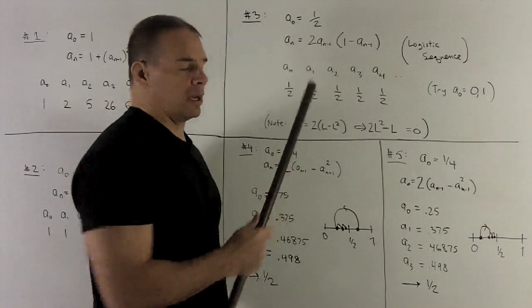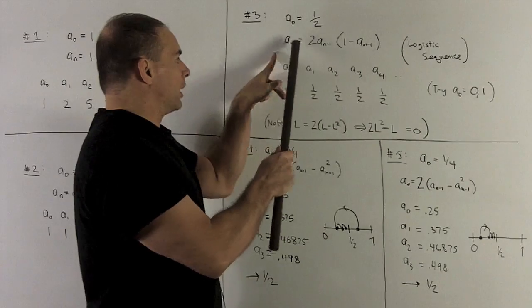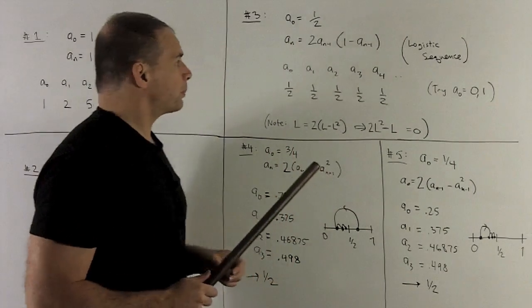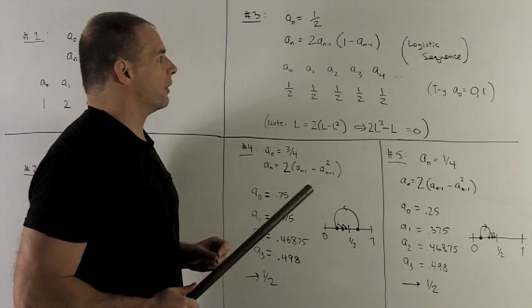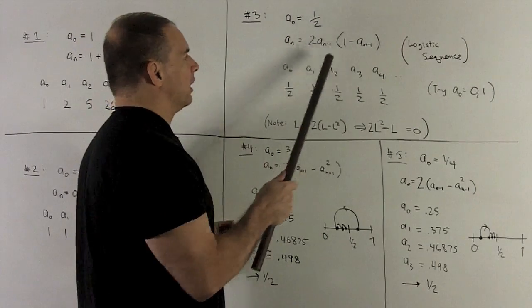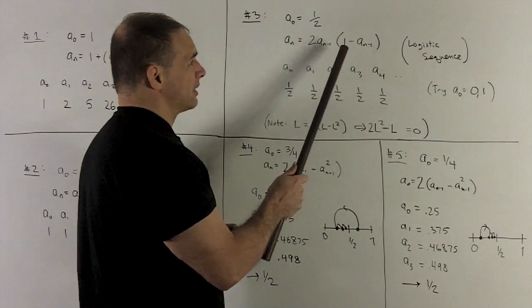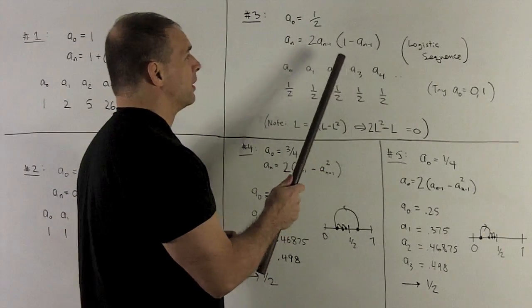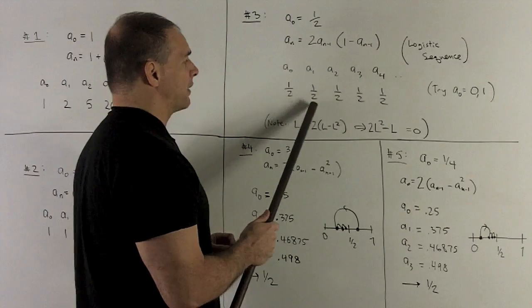Okay, and this will be interesting when the numbers that we're looking at, we're starting with, are between 0 and 1. So why don't we start with a half and see what happens. So if I put a half into here, it's 2 times a half times 1 minus a half, so it's going to be 2 times a half, which is 1, times a half. So half goes in, half comes out.